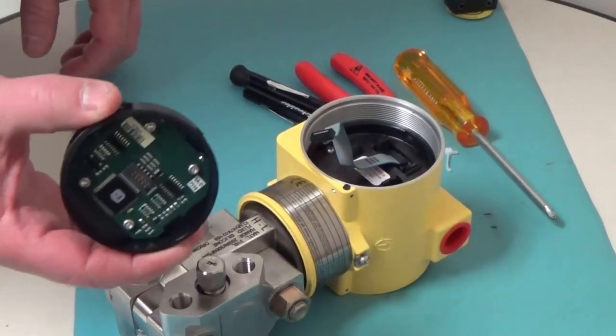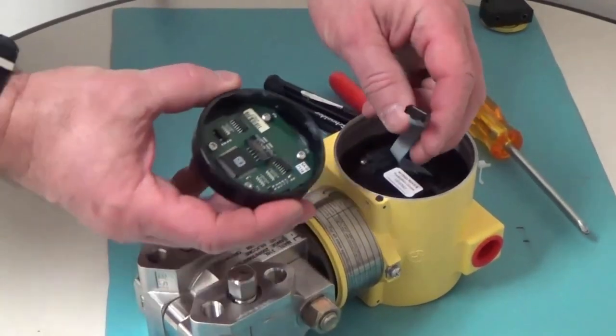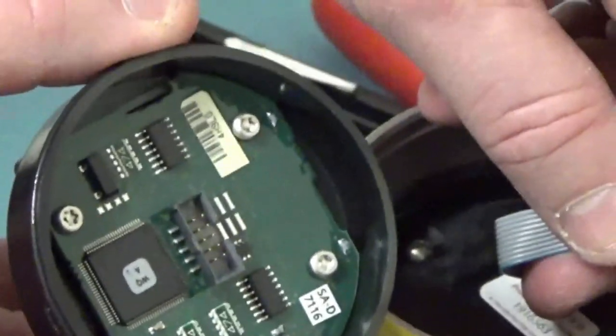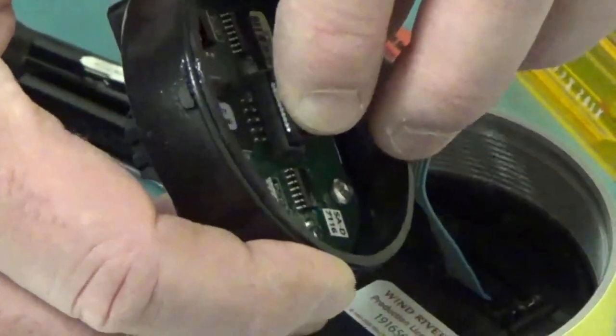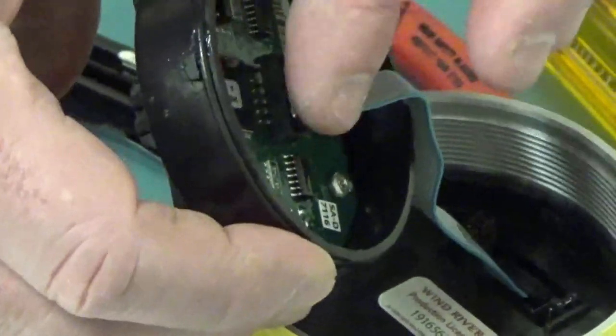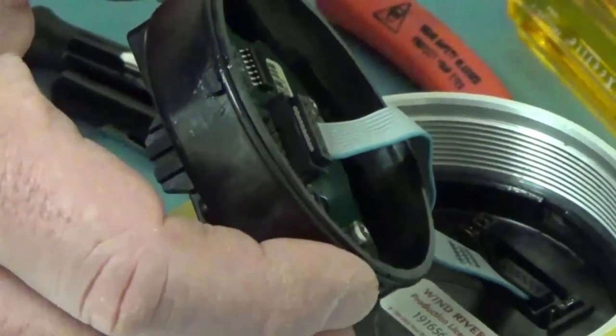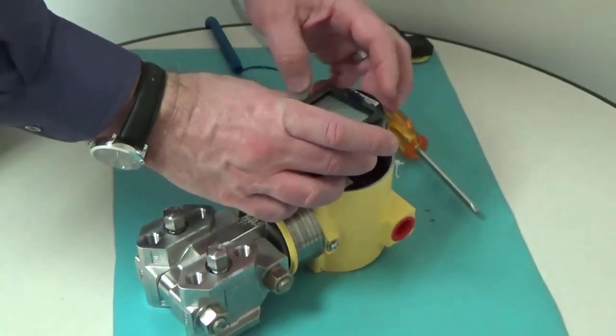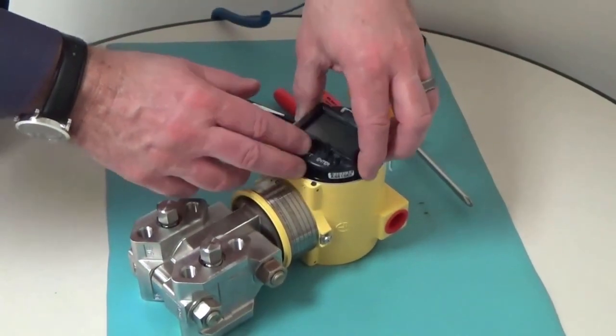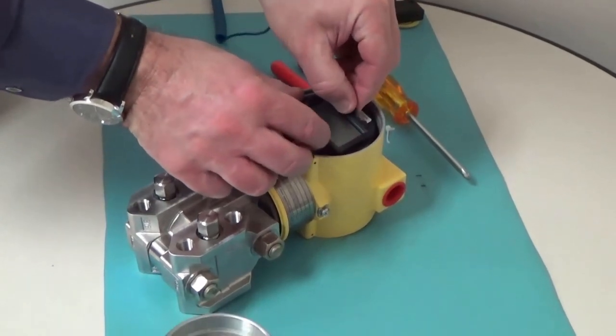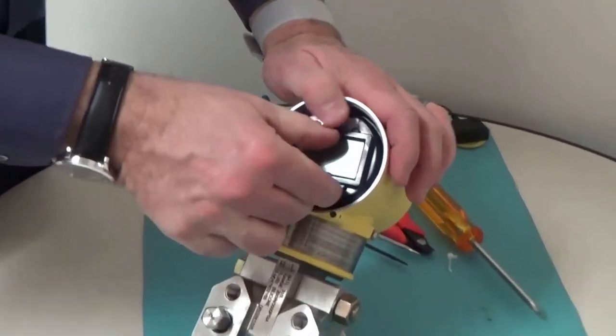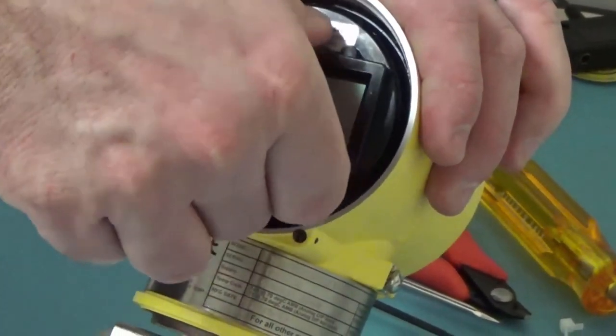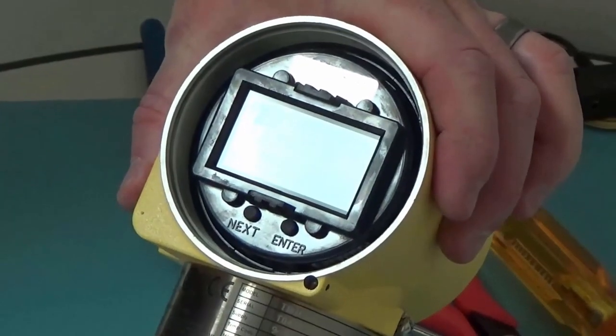We need to reconnect the display module. We can do that by plugging in the ribbon cable. It is keyed so it's obvious which way it goes into the connector on the back of the display board. You can feel when it mates properly with the connector. Then we just carefully bring that over and reinsert the display. It's just the opposite procedure to when we removed it. You can feel it when it clicks into place and then you turn it slightly to lock it. And everything is good.